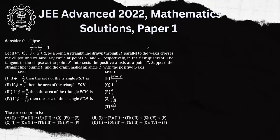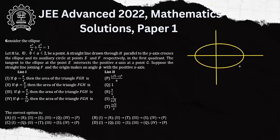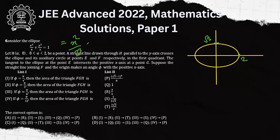In this question there is an ellipse. Let's set it up: the equation is x²/4 + y²/3 = 1, so a = 2 and b = √3.